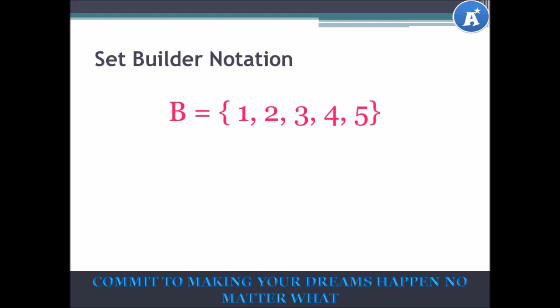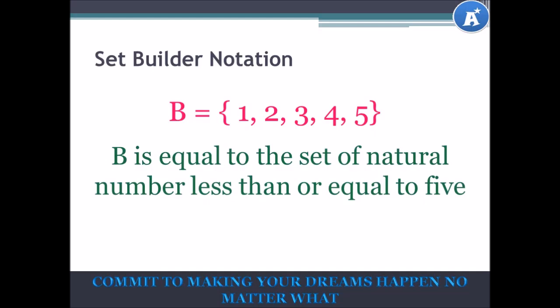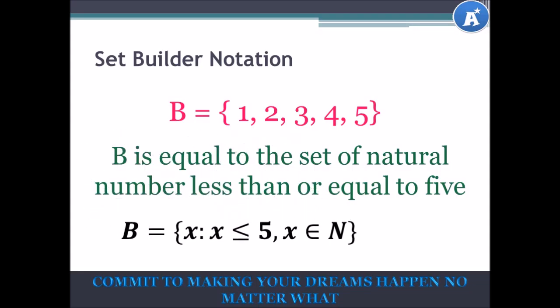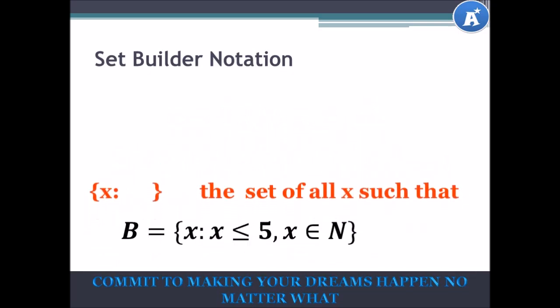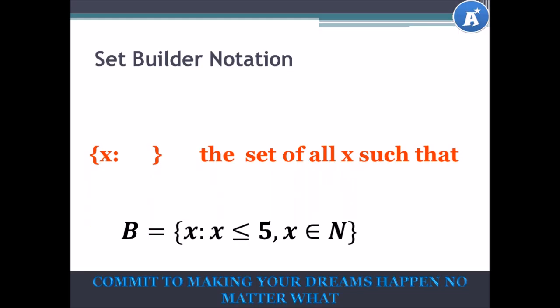Now we're going to look at set builder notation. Let's say B is equal to the set of natural numbers less than or equal to 5. In set builder notation, this can be written as X equals the set of all x such that x is less than or equal to 5, and x is an element of natural numbers. The symbol {x : } simply means 'the set of all x such that.'